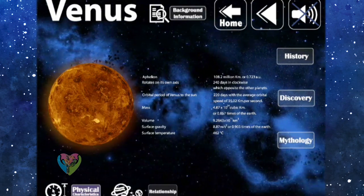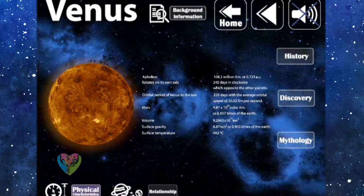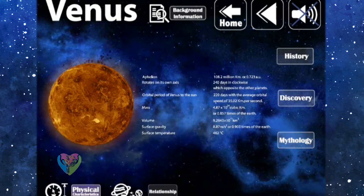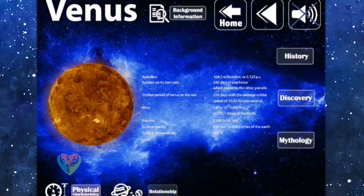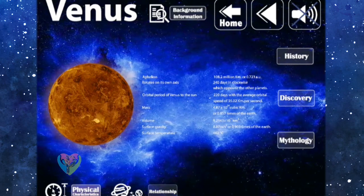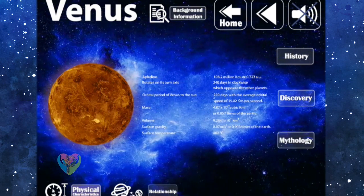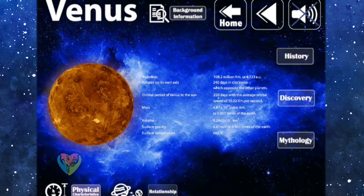The orbital period of Venus to the Sun is 220 days, with the average orbital speed is 35.02 kilometers per second.